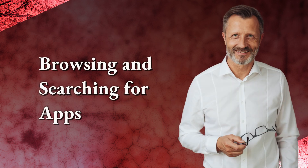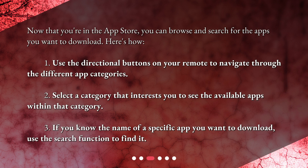Browsing and searching for apps. Now that you're in the App Store, you can browse and search for the apps you want to download. Here's how. 1. Use the directional buttons on your remote to navigate through the different app categories. 2. Select a category that interests you to see the available apps within that category. 3. If you know the name of a specific app you want to download, use the search function to find it.